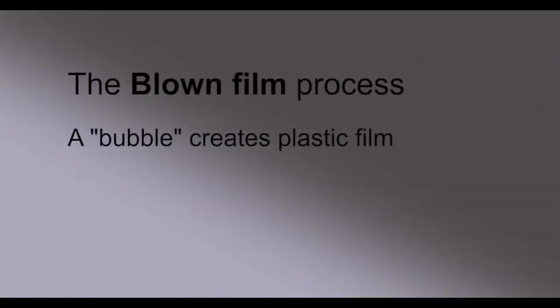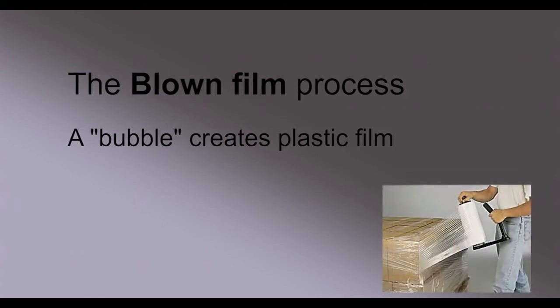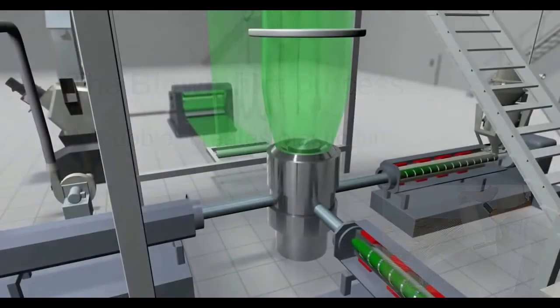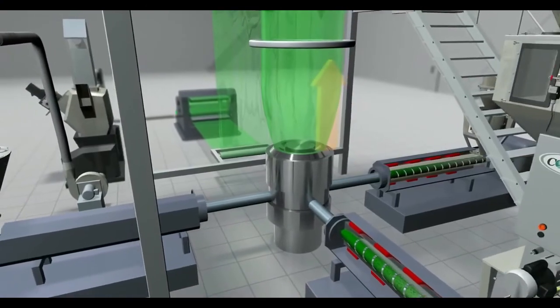In the blown film extrusion process, thin plastic material for products like garbage bags or the sheeting used in construction, industry, and packaging are produced. A very thin die opening, which is often fed by multiple extruders, faces upward in a round shape.